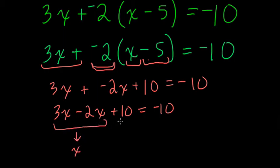And if I subtract 10 from both sides, I get x equals, well, here if I subtract 10, this is 0. Here if I subtract 10, that's negative 10 minus 10, which is negative 20. And that's my answer.